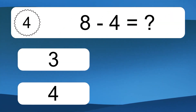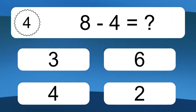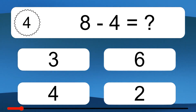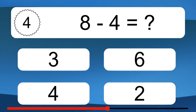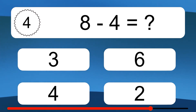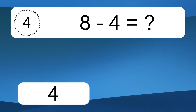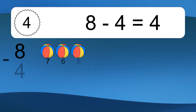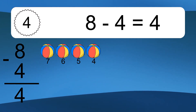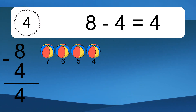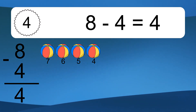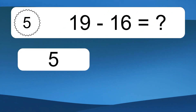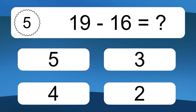8 minus 4 equals what? 8 minus 4 equals 4. Let's count it: 7, 6, 5, 4. 19 minus 16 equals what?